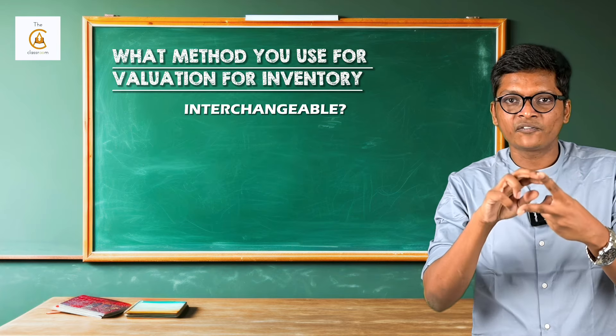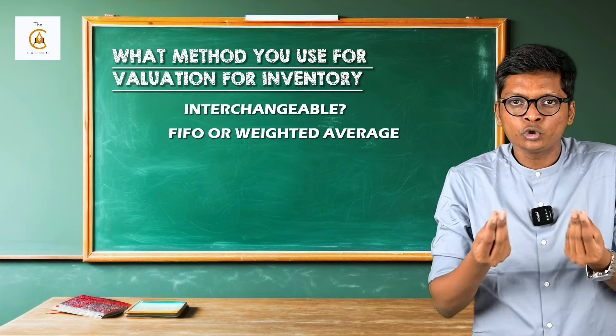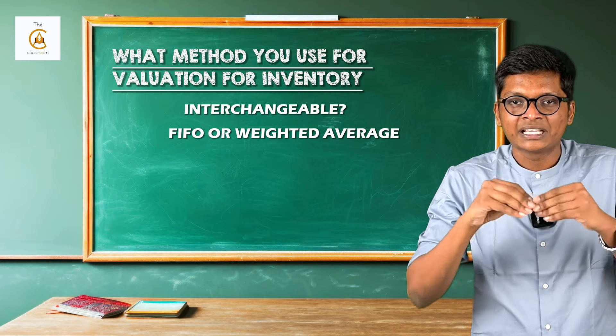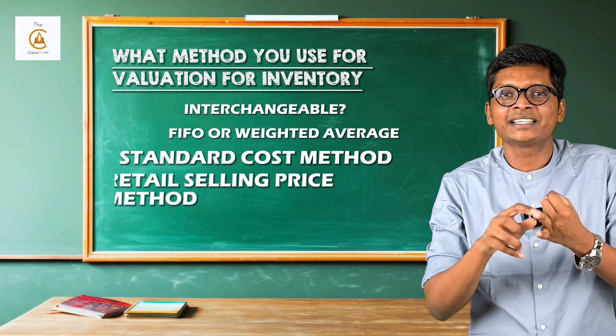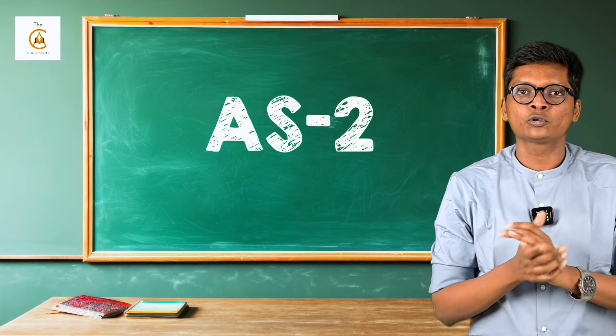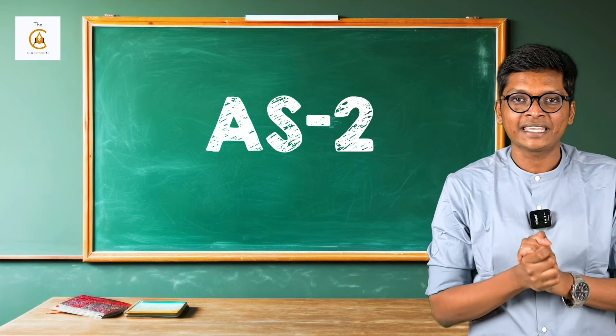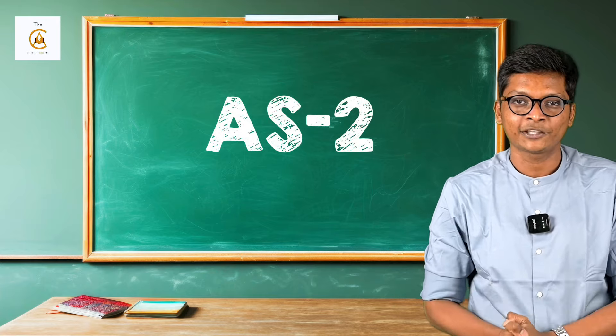Lastly, the standard talks about what method you use for valuation of inventory. We ask whether the inventory is interchangeable. If inventory is not interchangeable — meaning specific inventory — we use a method called the specific identification method. Where inventory is interchangeable, the first two options are FIFO or weighted average. If these two cannot be used, additionally two more methods are the standard cost method and the retail selling price method.